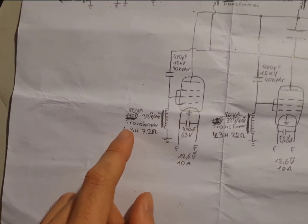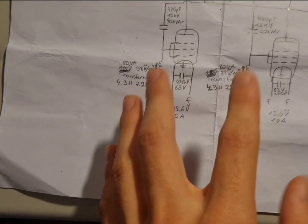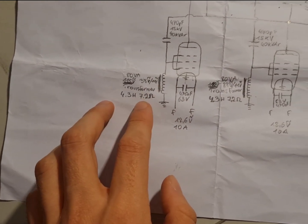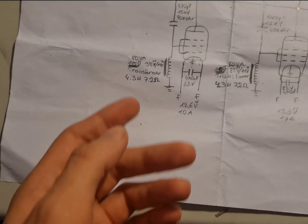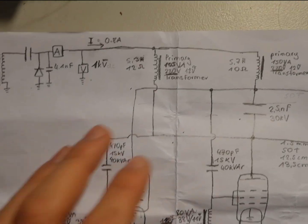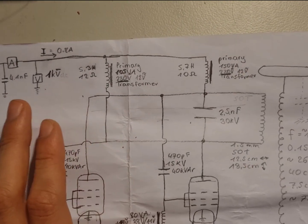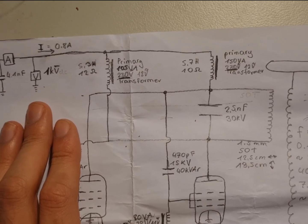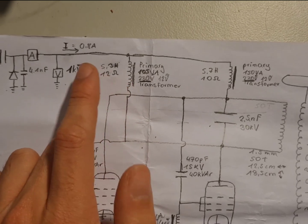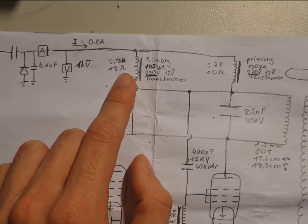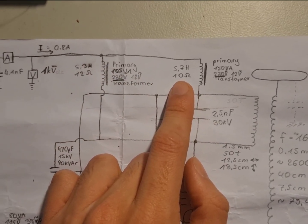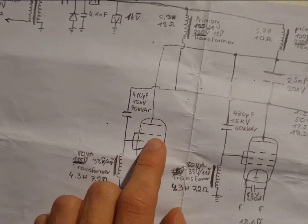The grid chokes, 4.3 Henry, 7.2 ohms of DC resistance and that amount of inductance. The primary chokes are actually a bit different. That might be contributing to the red plating of one tube and the other. So this transformer being used as a choke has 7.3 Henry inductance and this one has 5.7 Henry inductance. And this is the tube that is red plating. So I don't know if it's about this. It might be some other reason.